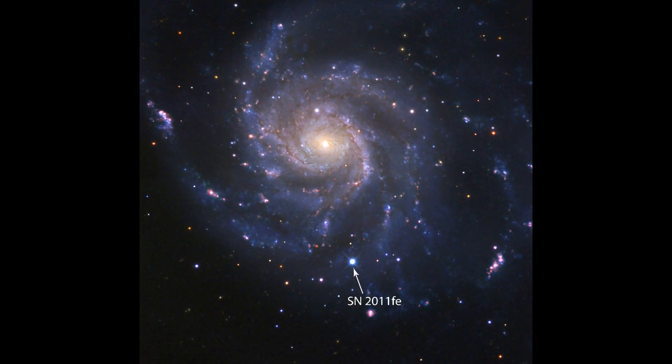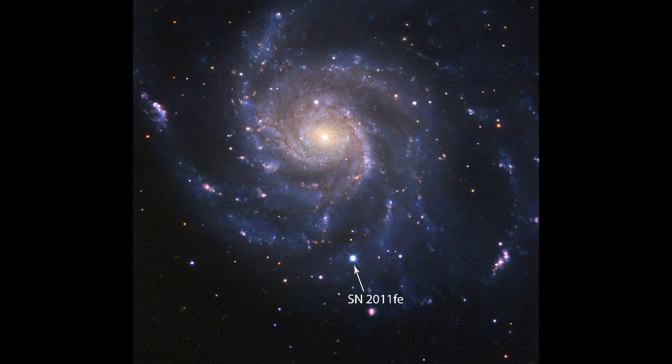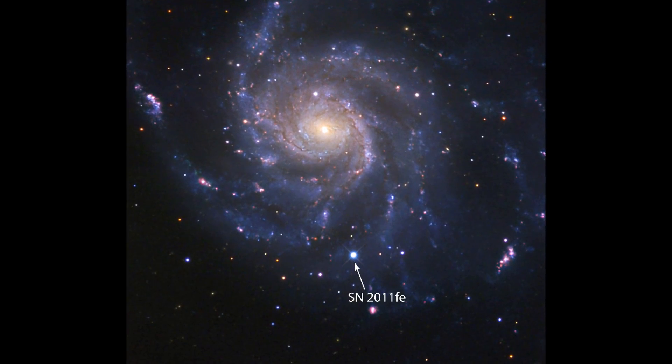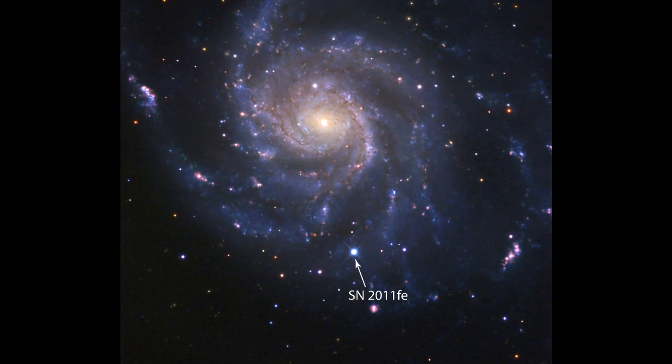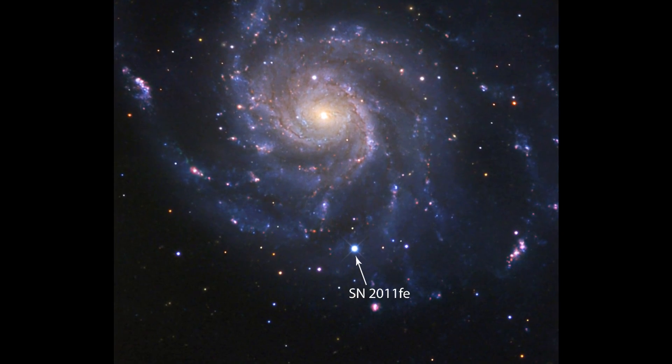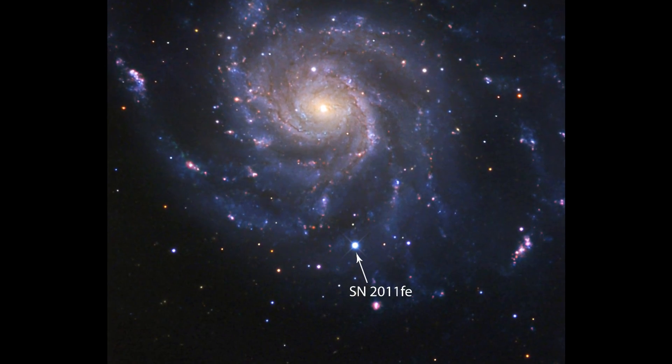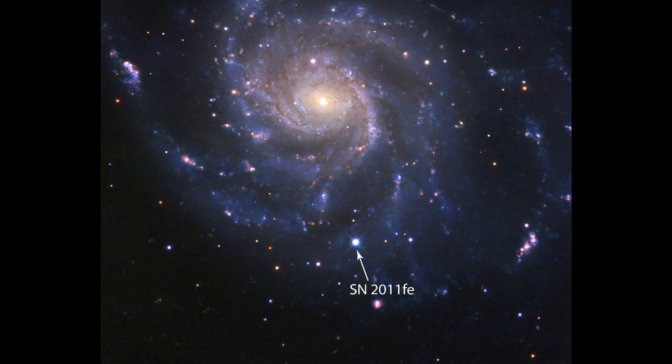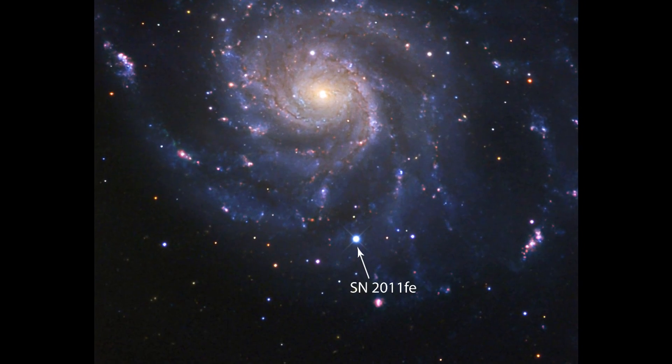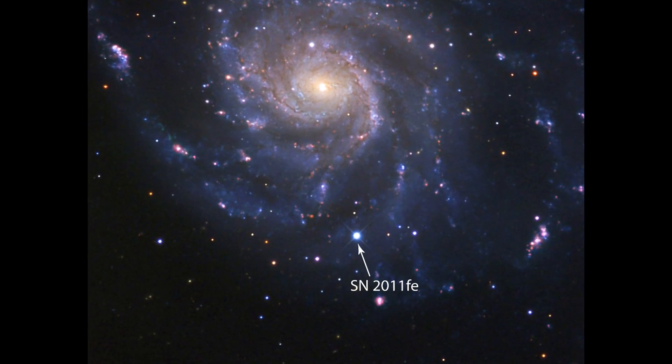2011 FE was discovered in the Pinwheel galaxy on the 24th of August 2011, less than one day after the explosion. This supernova is the nearest Type 1A in the past 25 years. Additionally, extensive multi-wavelength follow-up observations show that 2011 FE is only slightly reddened and is surrounded by a relatively clean environment.